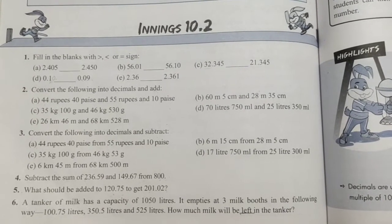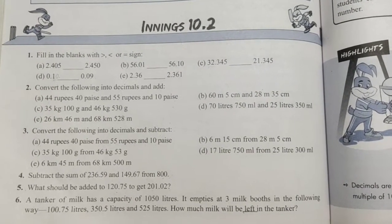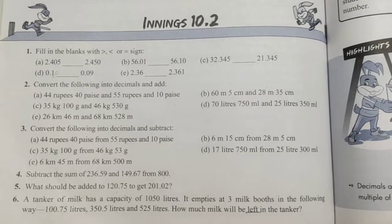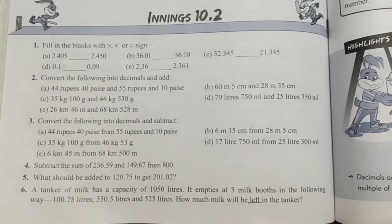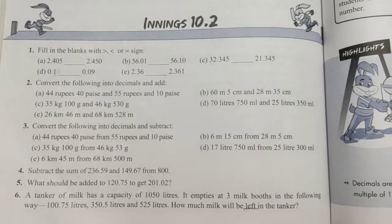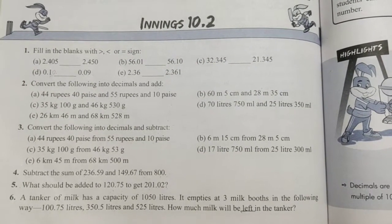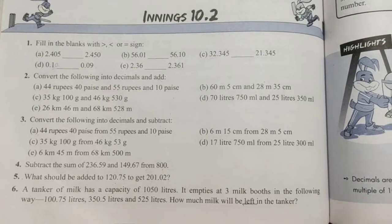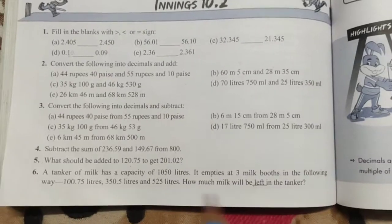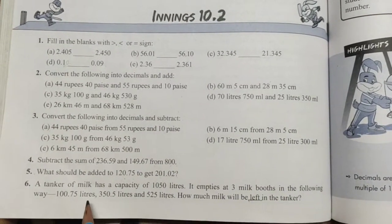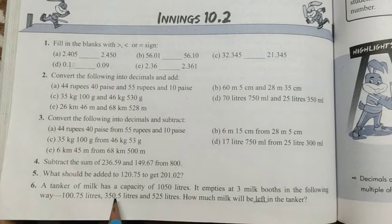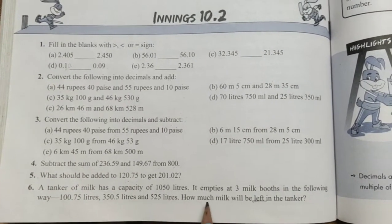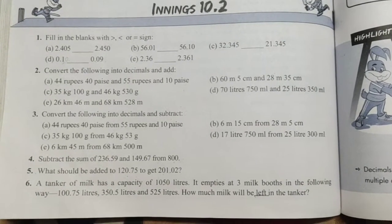A tanker of milk has a capacity of 1050 liters. Capacity means that it can contain 1050 liters of milk. It empties at 3 milk booths in the following way: first milk booth 100.75 liters, second 350.5 liters, and third 525 liters. How much milk will be left in the tanker?